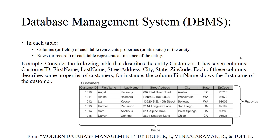Each row in the table is called a record. For example, we have six customers. Customer with ID 1010 is Angel — we have her first name, last name, address, city, state, and zip code. Each record, or row, in the table is a sample of the entity where all the columns are filled in. Most of the time each column needs to have a value.